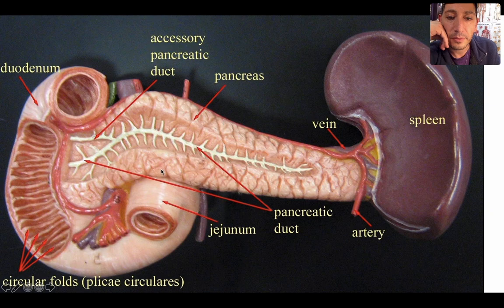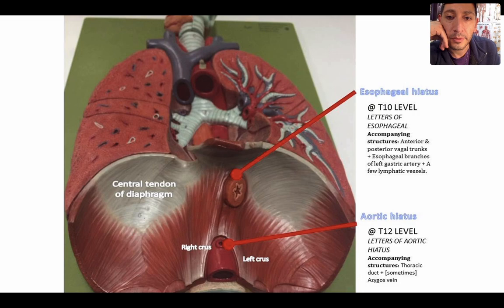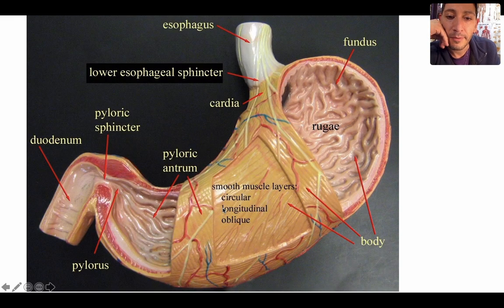All this is the pancreas, and here's your pancreatic duct. Your esophagus comes down through the diaphragm to reach the stomach, and this hole in the diaphragm is called your esophageal hiatus.